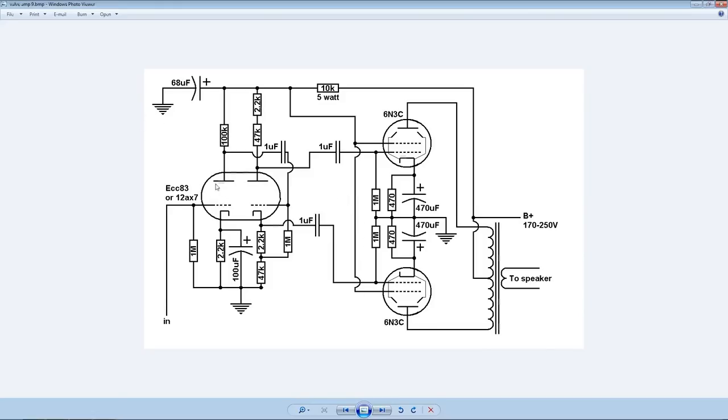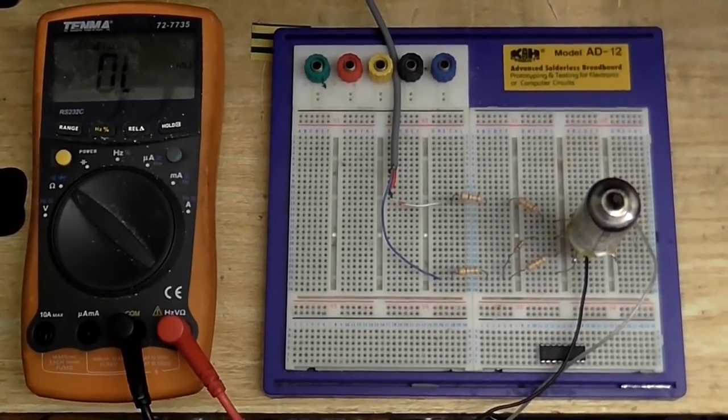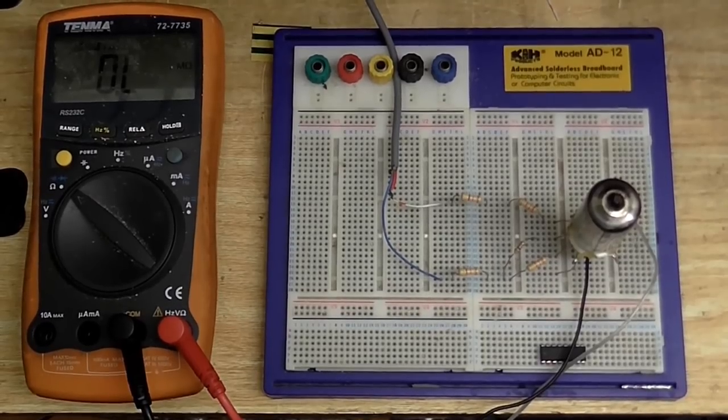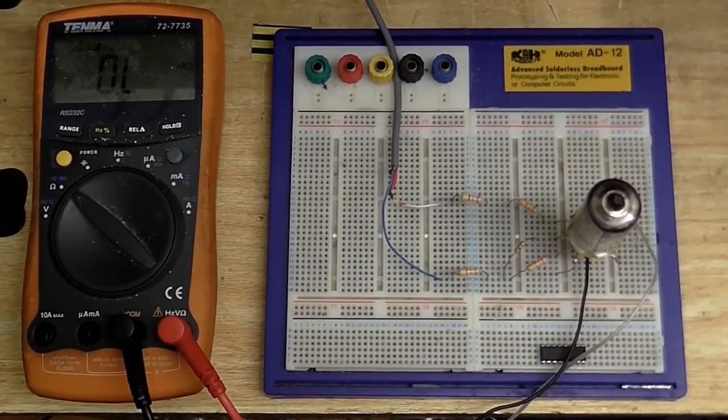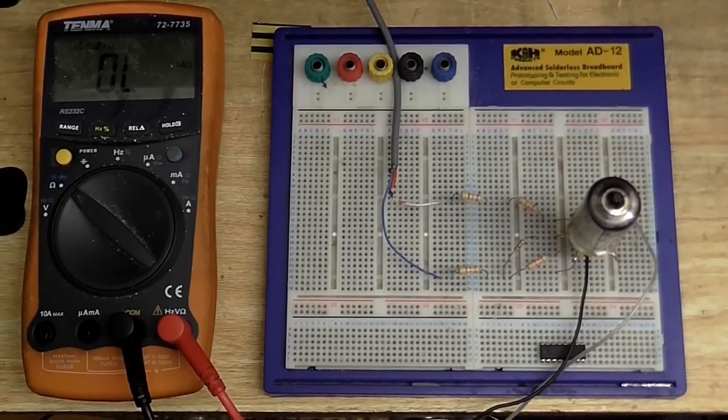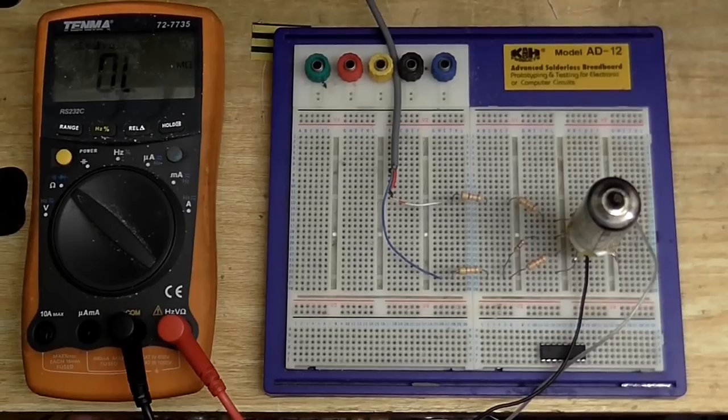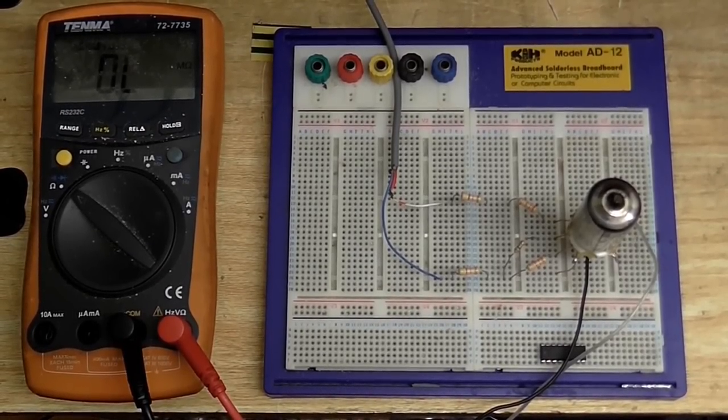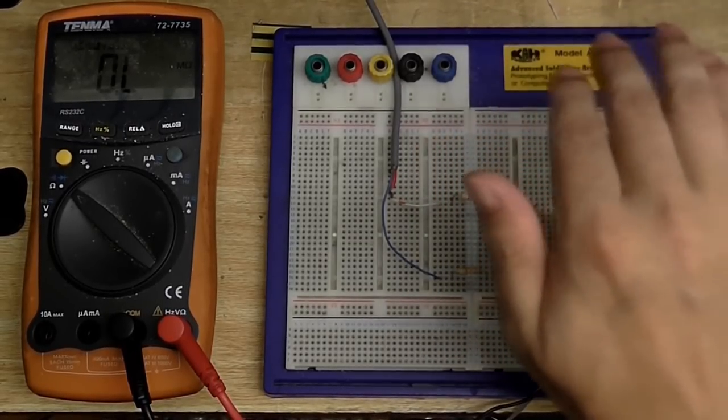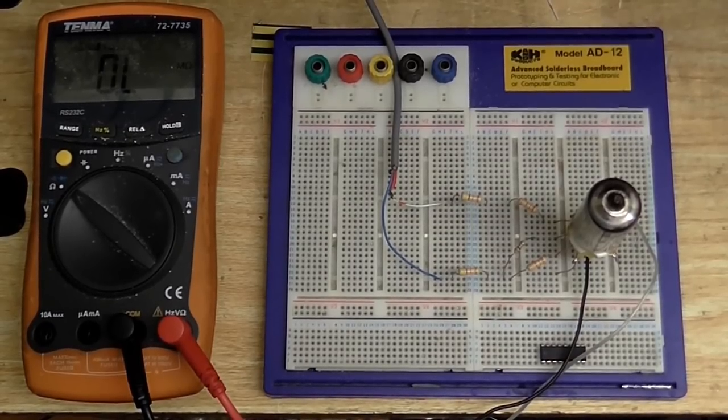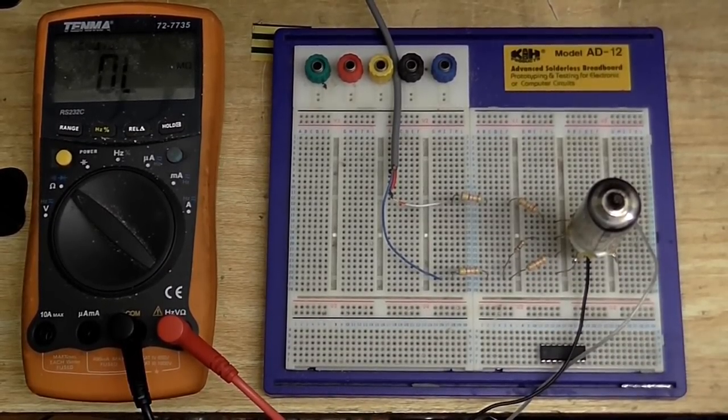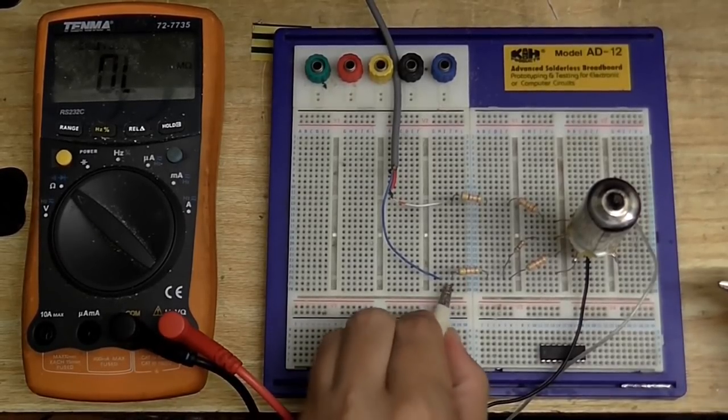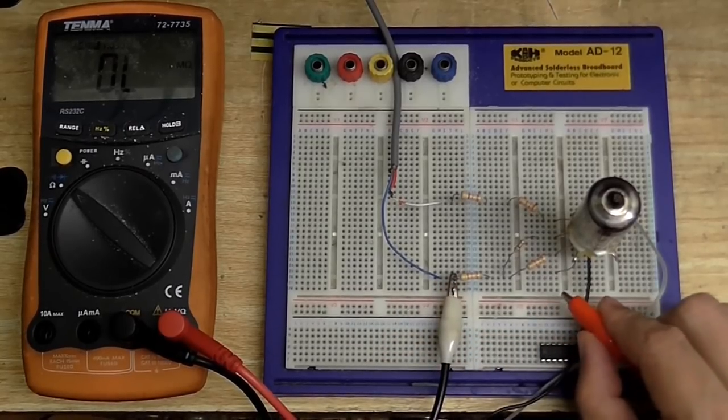So let's do some experiments with the phase inverter. So I've got an ECC83 tube and I've built the phase inverter part of the circuit. Now I've got to be very careful here because this is a high voltage experiment. I'm just turning the tube's filament on. I'll just give that a few seconds to get up to its full temperature. So while we're waiting for this to warm up, I'm going to connect my meter to the negative and the other end to the cathode.